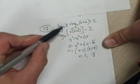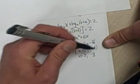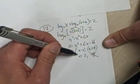But now I've got to check these. And if I look back up in here, 2 is okay. But if I try negative 8, I'm going to end up taking log 4 of a negative, which I can't do in the reals.